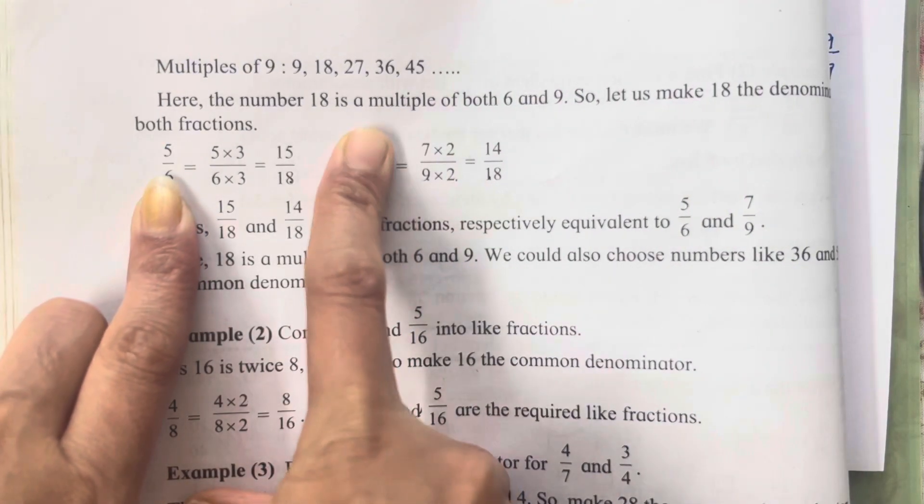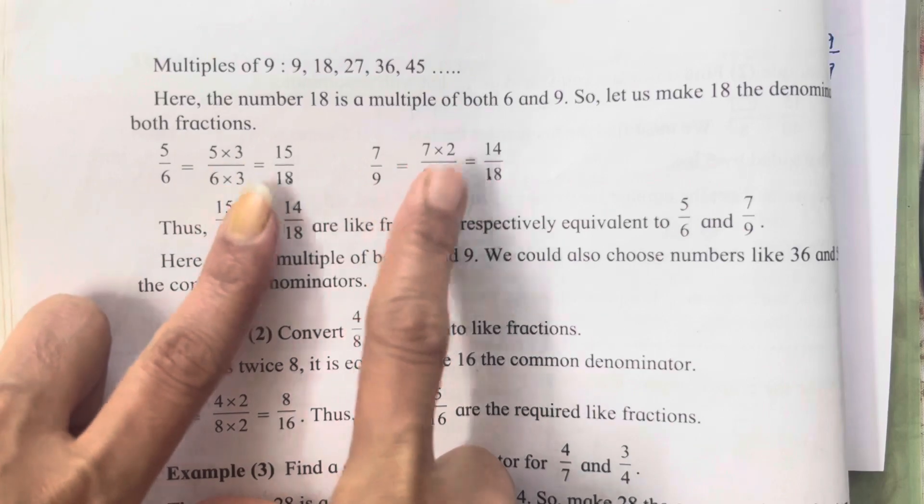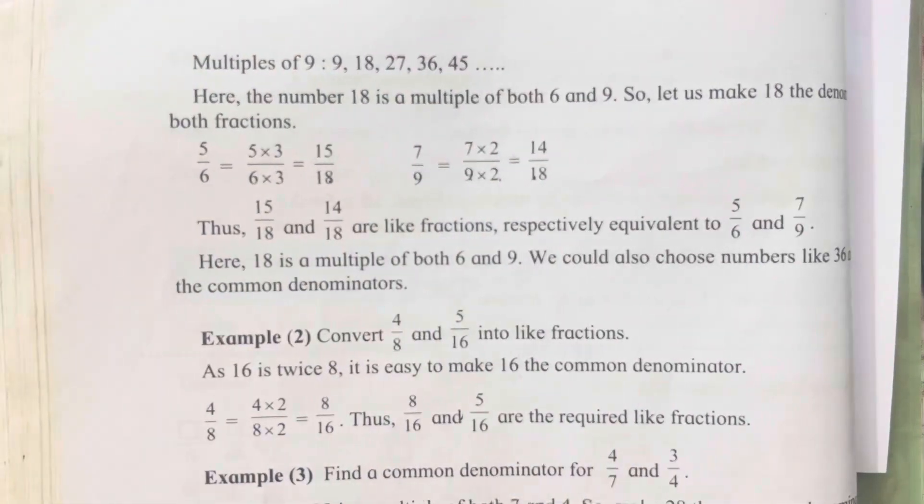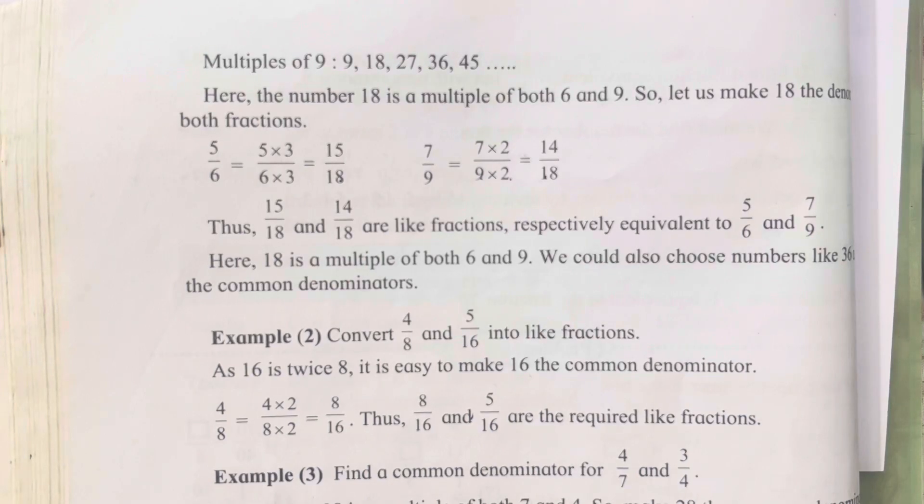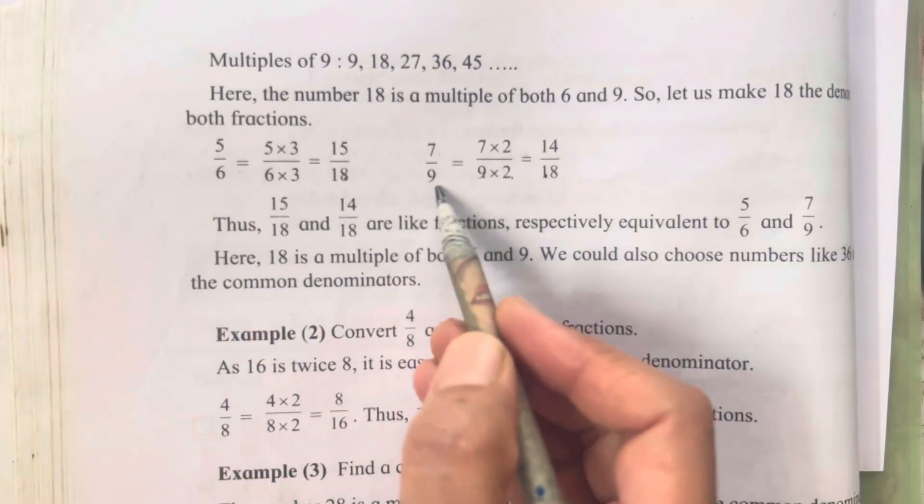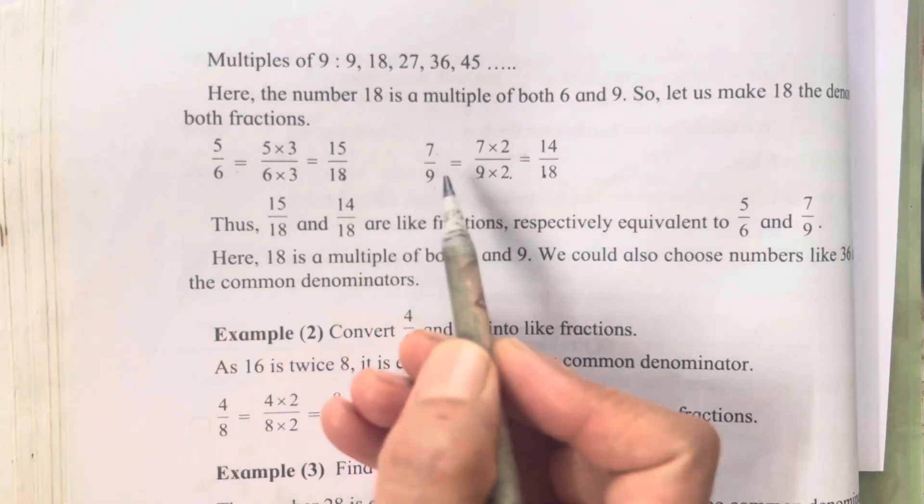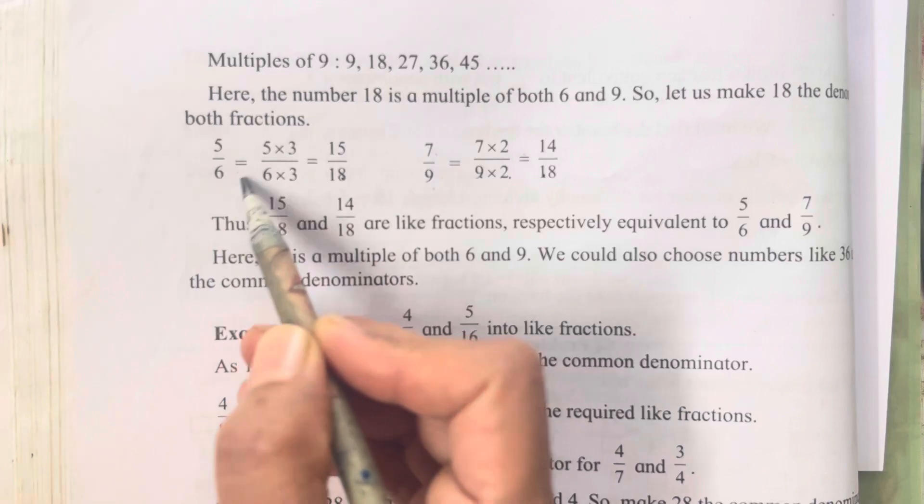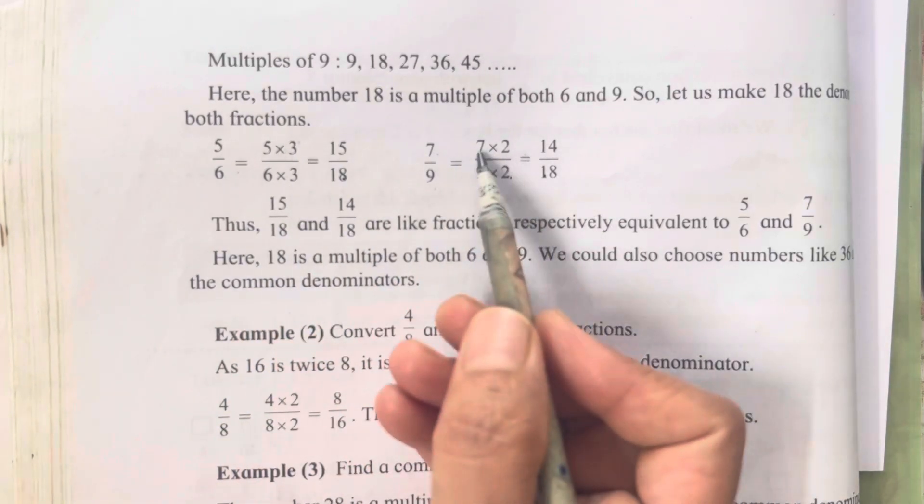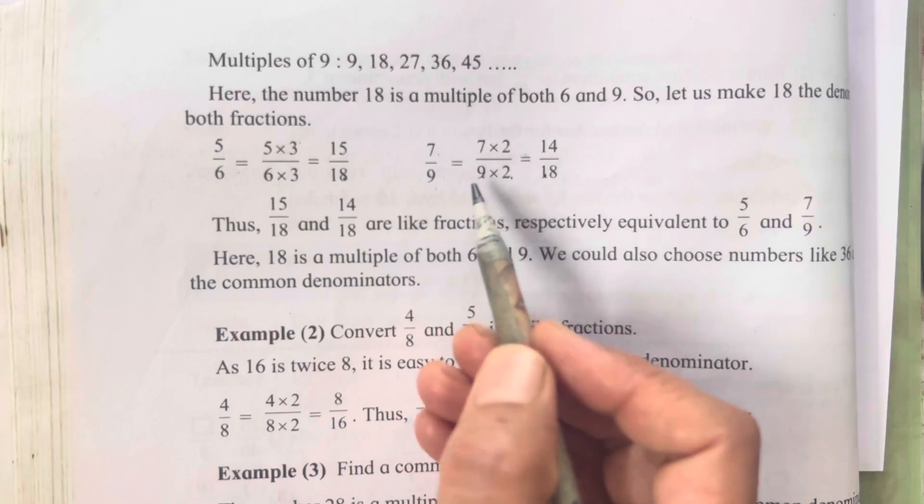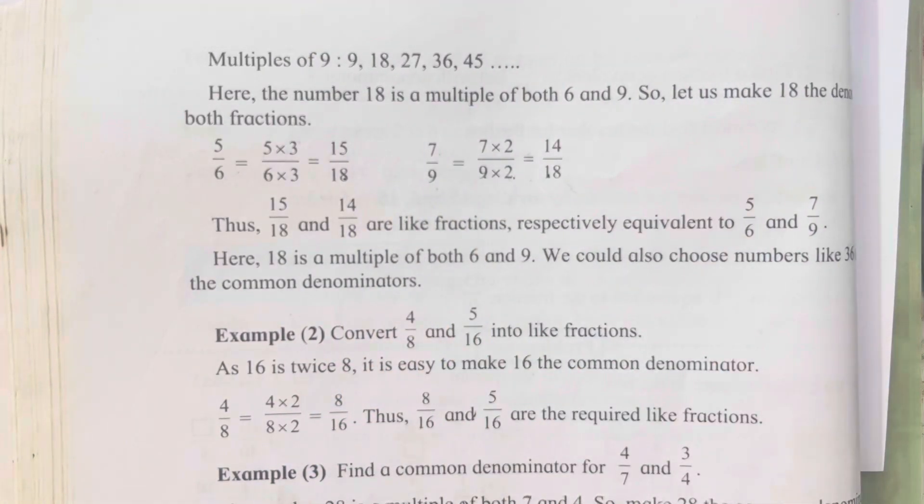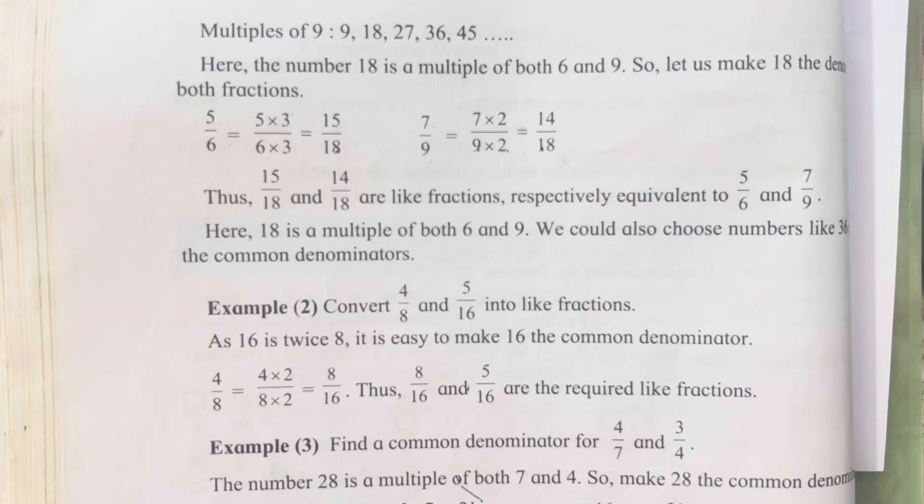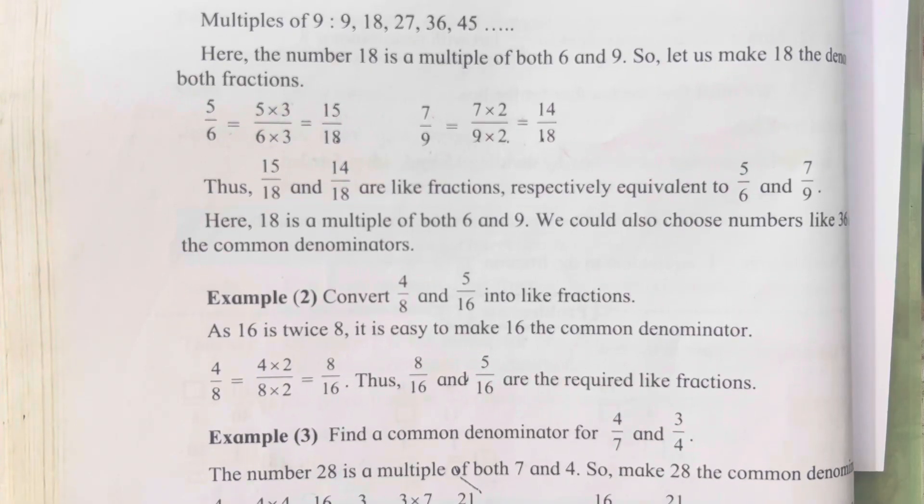So in this way they have given the examples. 5 upon 6 and 7 upon 9. You all can solve it in this way also, or you all can solve it in the way I have shown you all. Both the ways you are going to get the same answer. So 5 upon 6 and 7 upon 9. Both the denominators we have got equal by multiplying the numbers with each other.